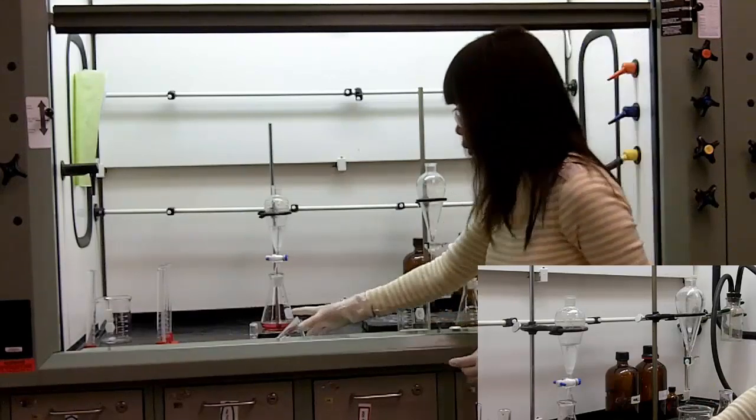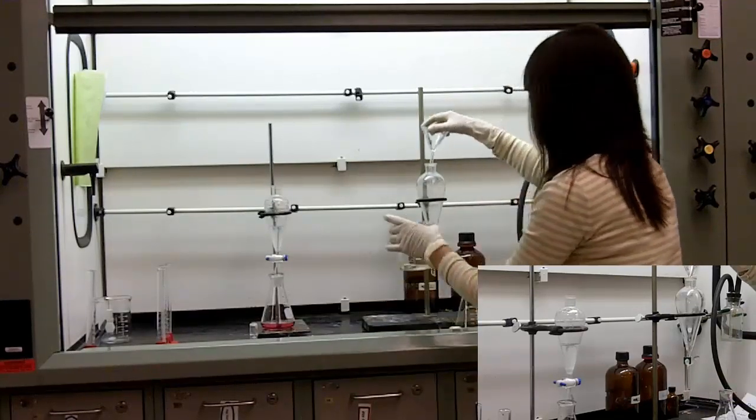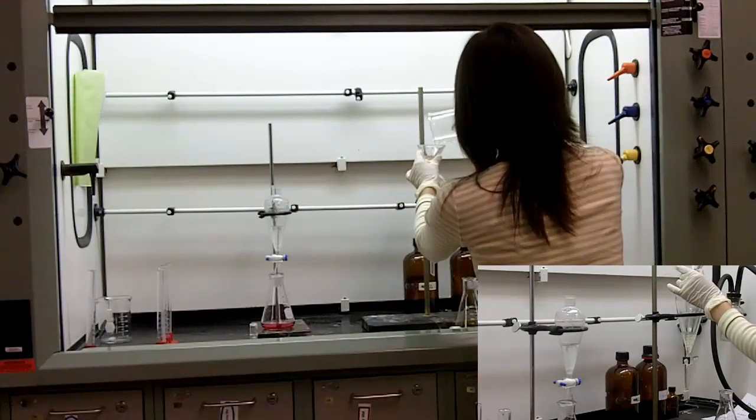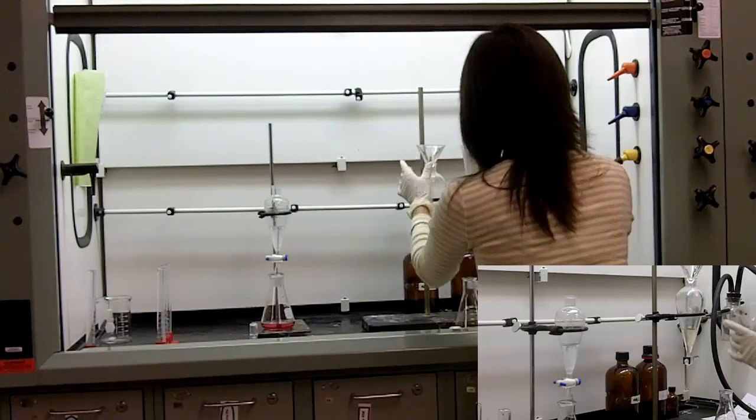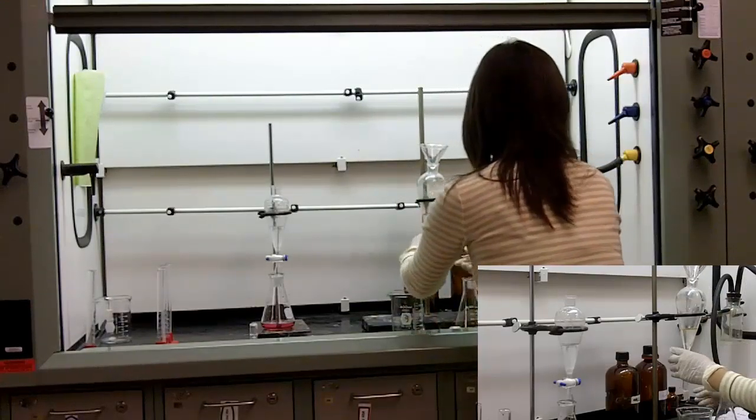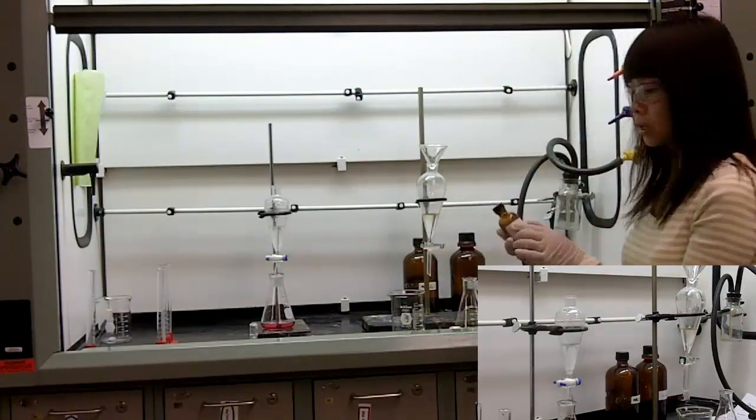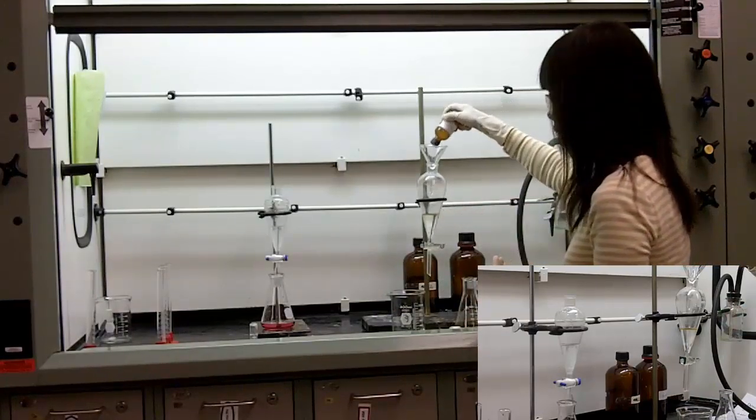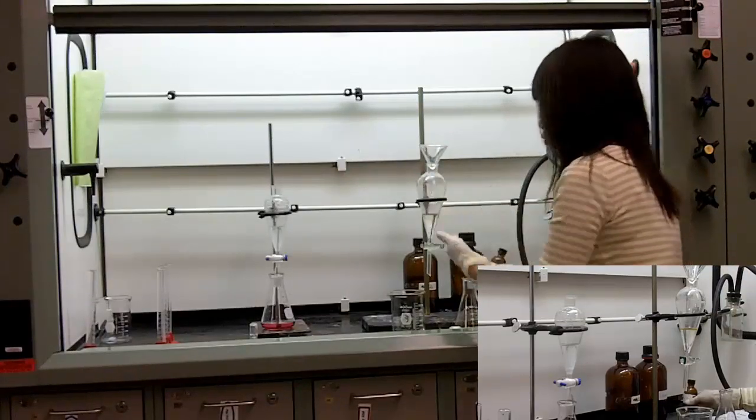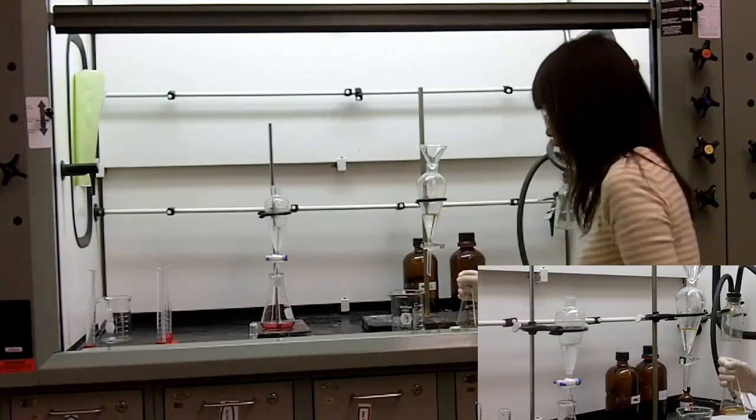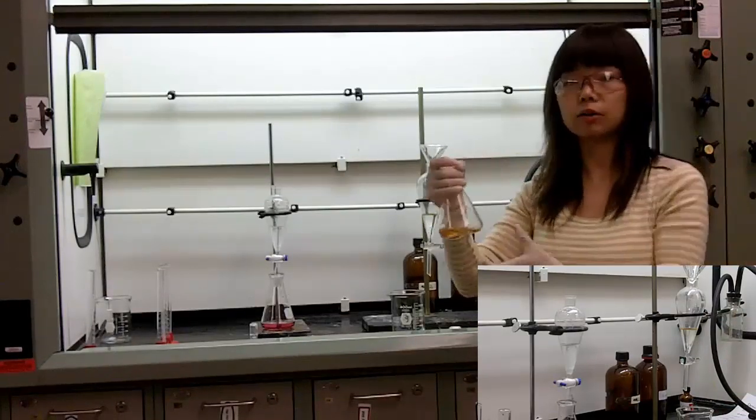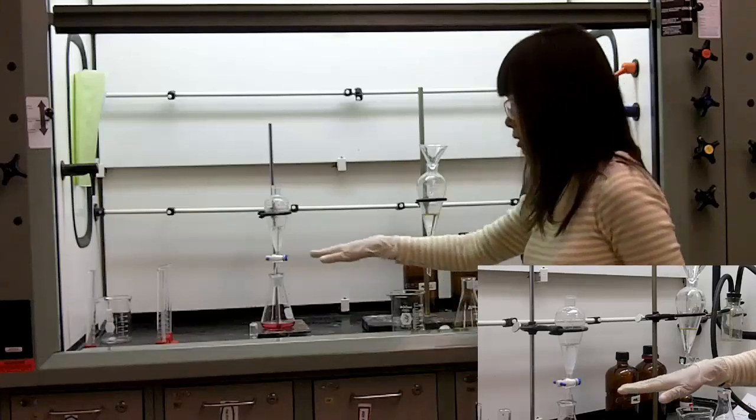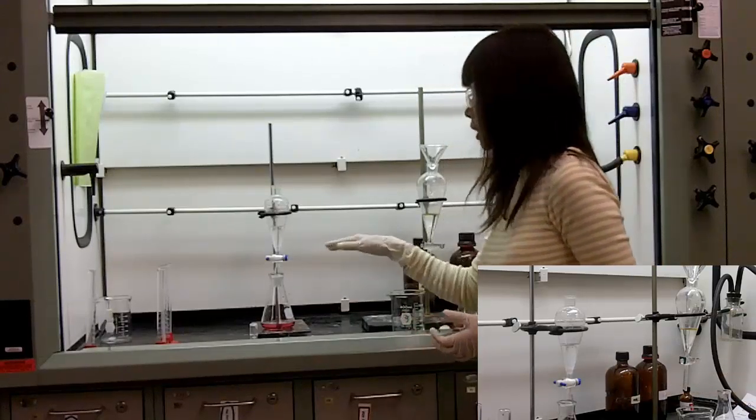After this step, you want to return the aqueous layer to the separatory funnel and then put a second portion of your organic layer, which is diethyl ether we used here. Do the extraction two more times and combine all the organic layers. This will be your recovered organic compound. As you can see, determining the solvent density, the extraction might be slightly different.